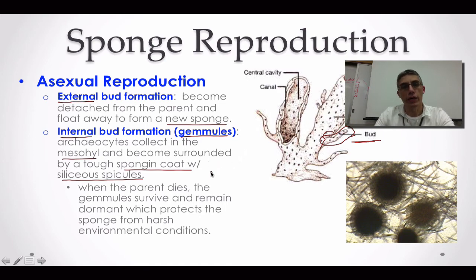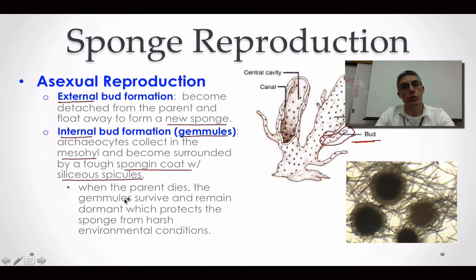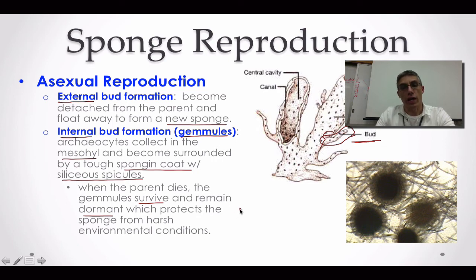The main purpose of these gemmules is that when a sponge dies because of some environmental situation — maybe an increase or decrease in temperature, or poor water quality — these gemmules can actually survive. They remain dormant and protect the sponge from harsh environmental conditions. Once the conditions in the environment become more favorable, just like a cyst, these gemmules are going to break open and form a brand-new sponge.